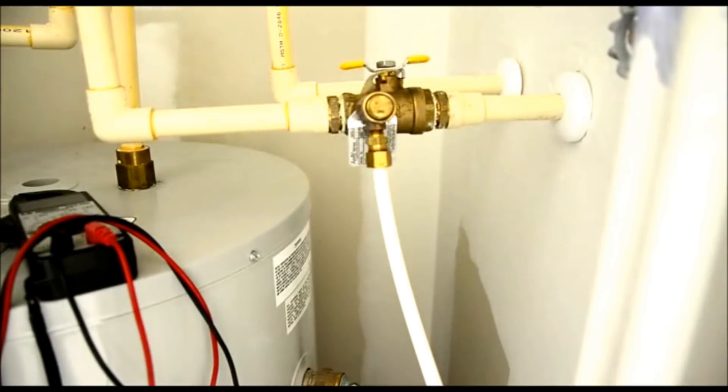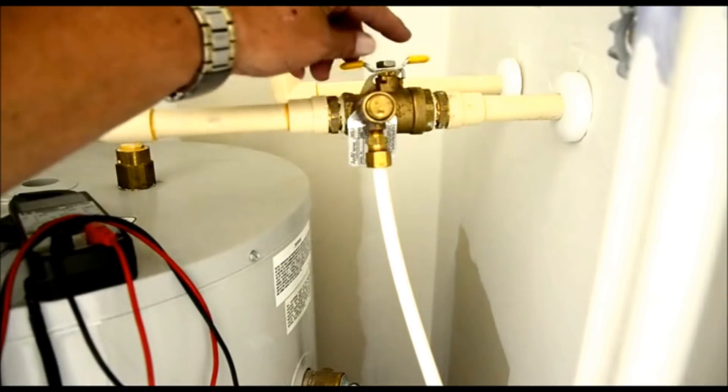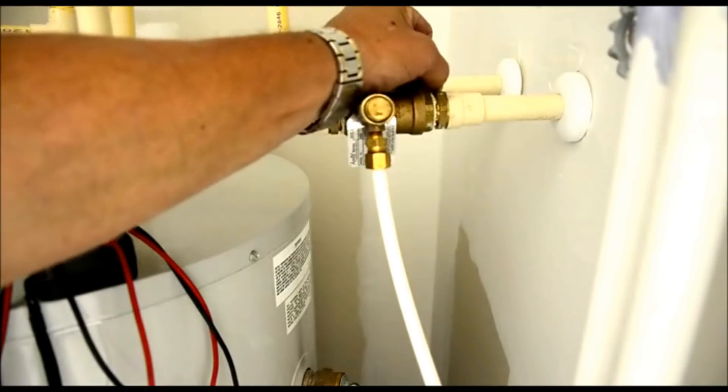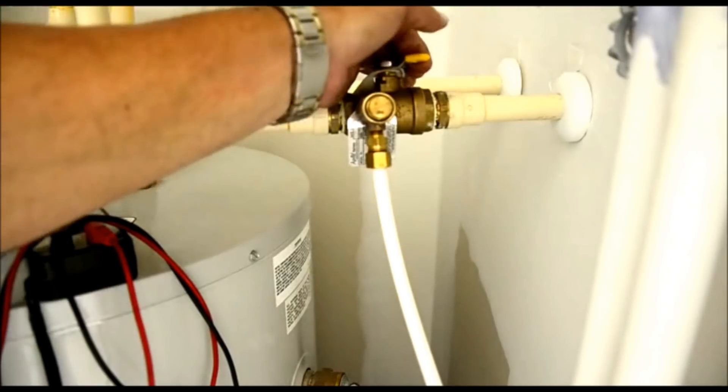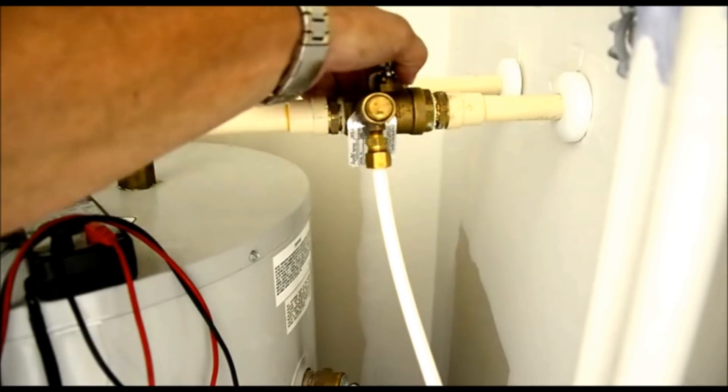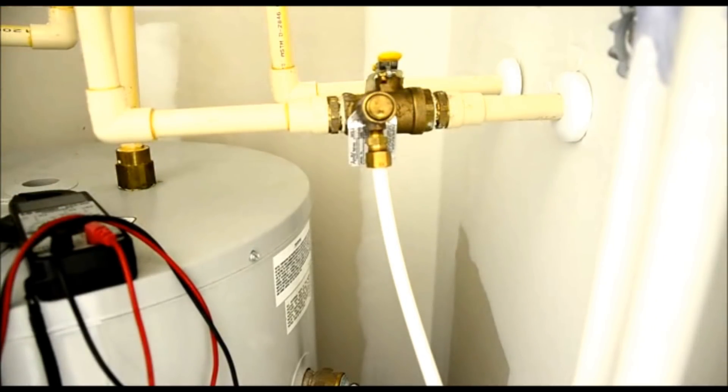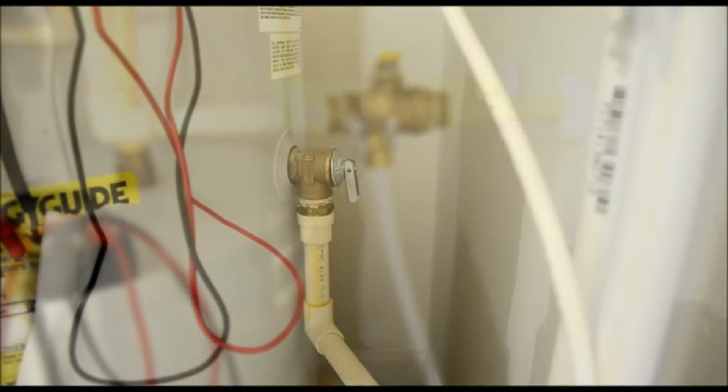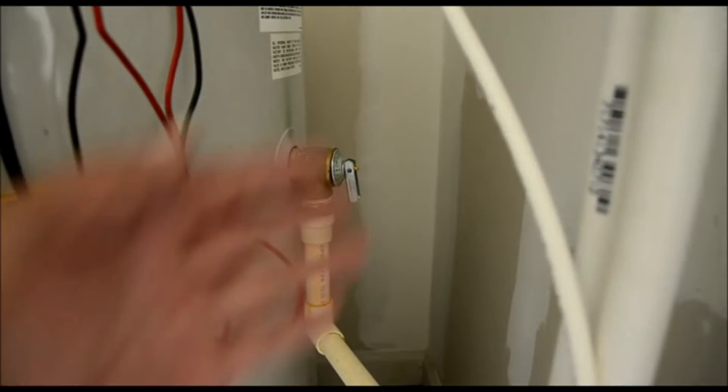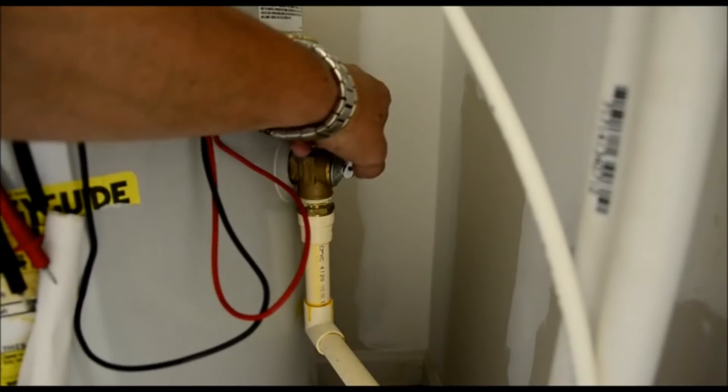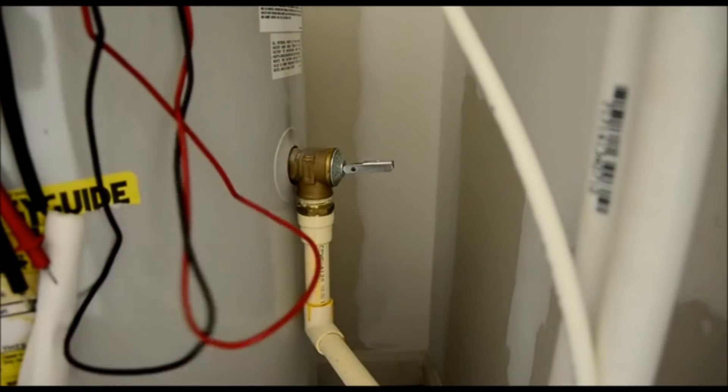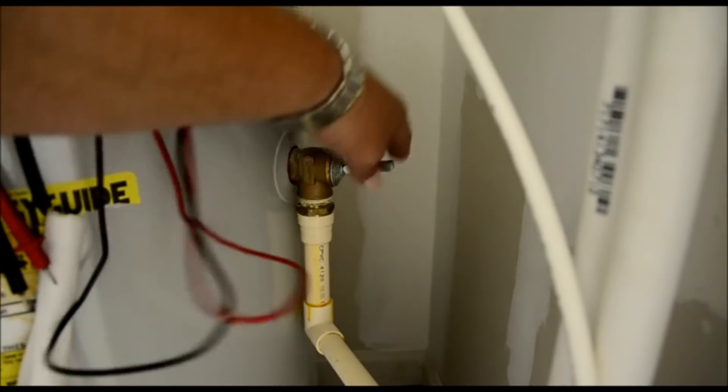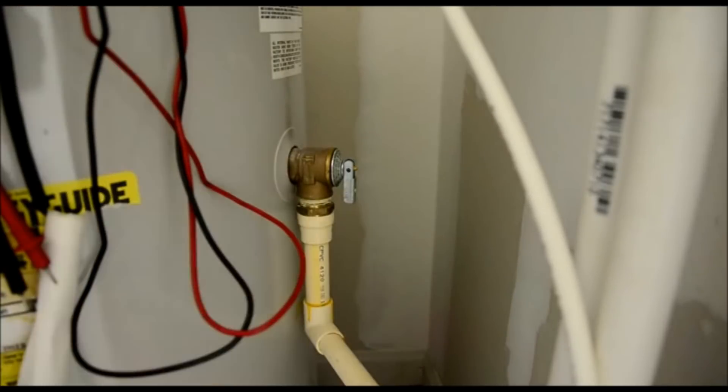The next step we want to do after making sure the power is turned off is we want to shut the water off of anything that's going into the water heater. And that takes care of that. Now what we want to do is to go ahead and take the pressure relief valve and relieve any pressure that's on the tank. And then go ahead and close it.